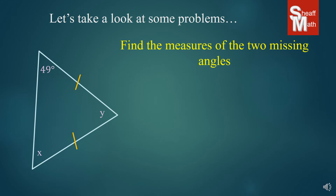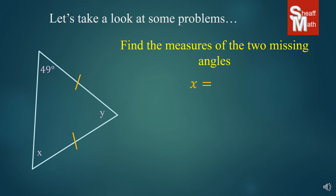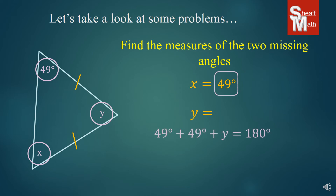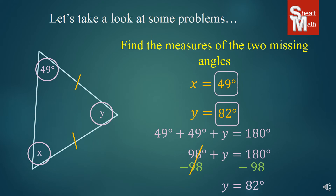Now we have to find the measure of two missing angles. In this isosceles triangle we've got the two legs and the two base angles: 49 and X. We know those are equal, so X equals 49. Now what about Y? We learned that all of the angles add up to 180 degrees. Since we know two of them are 49, we write: 49 plus 49 plus Y equals 180 degrees. We subtract 98 from both sides and get Y equals 82 degrees.